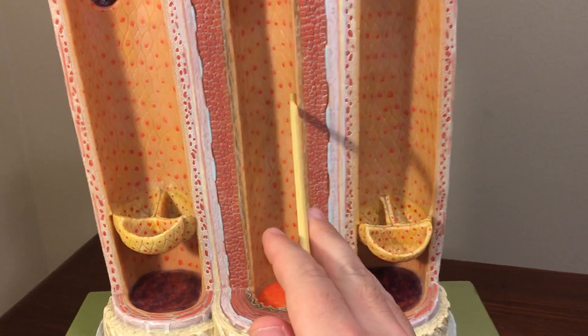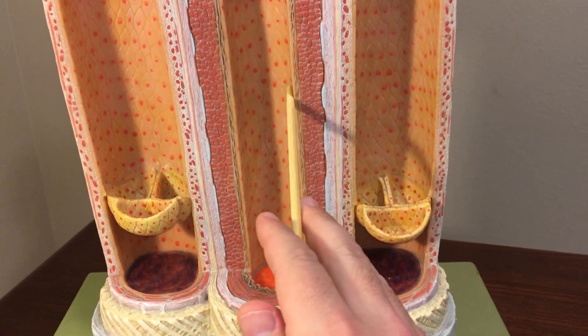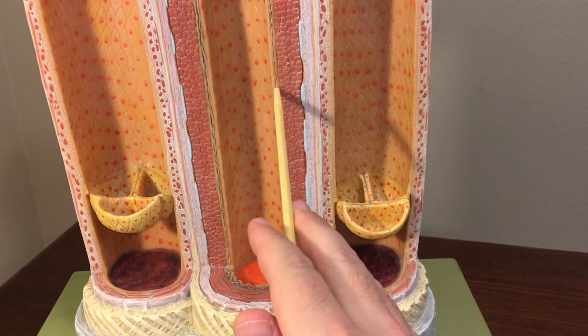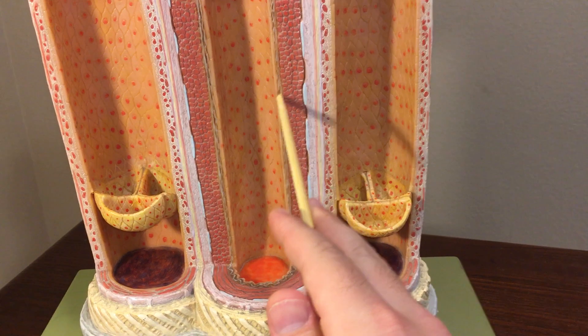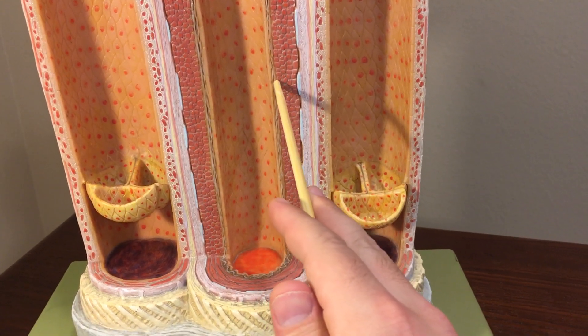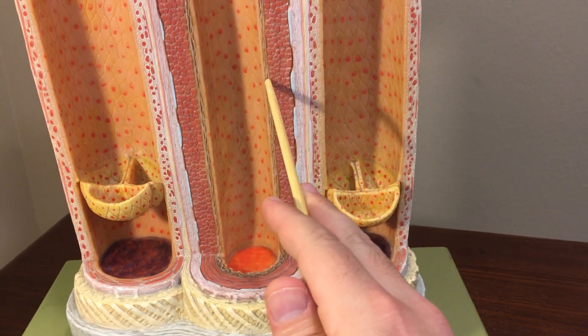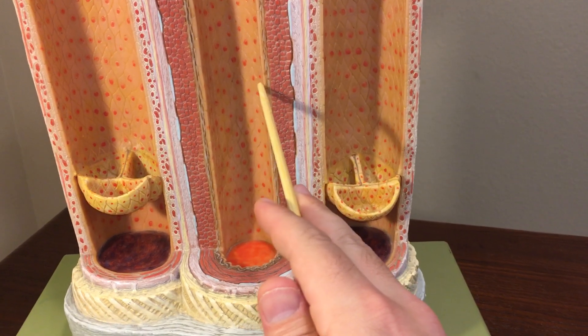It's simple squamous epithelial tissue, and then superficial to it is the internal elastic lamina right here. So the endothelium and the internal elastic lamina consists of your tunica interna.